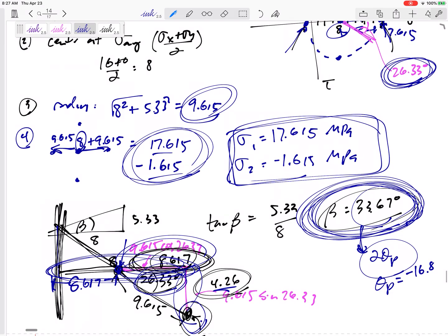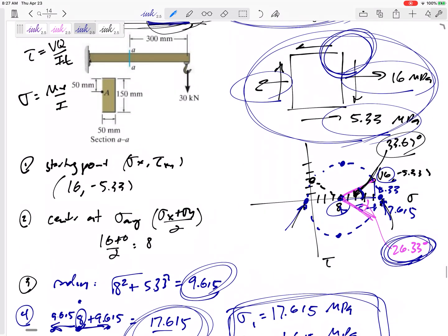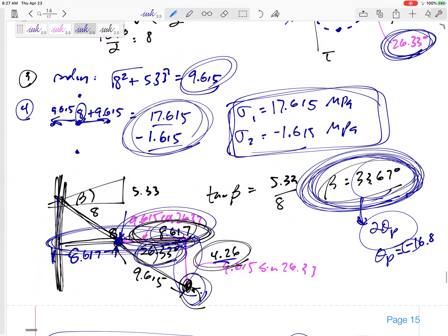But it would be negative because here's where I started. I started right here. I needed to go clockwise to get to the principal plane. And clockwise is a negative angle. So theta p would technically be negative, this right here.